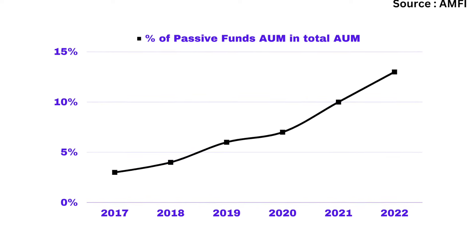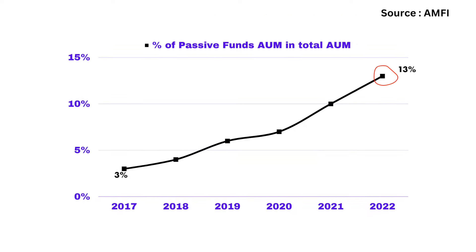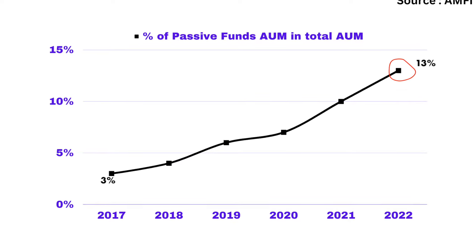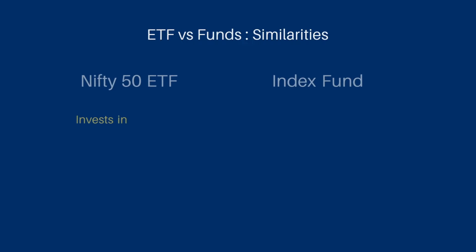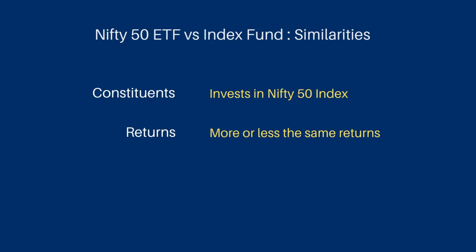In this chart, you can clearly see that in 2017, passive funds were about 3% of total funds, and in 2022, passive funds grew to 13%. Looking at Nifty 50 ETF versus Nifty 50 Index Fund, both have the same underlying asset — Nifty 50. The difference between them is the tracking error and the expense ratio, which may differ by around 0.1% or 0.2%.